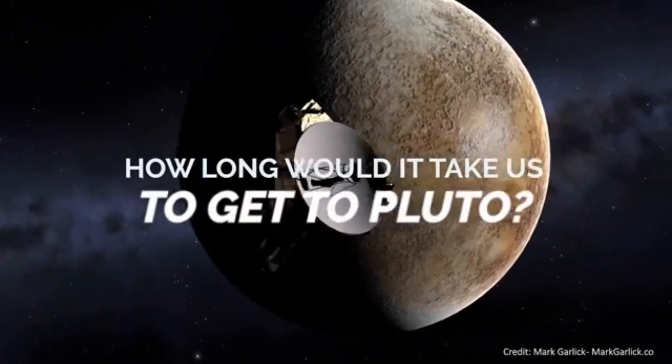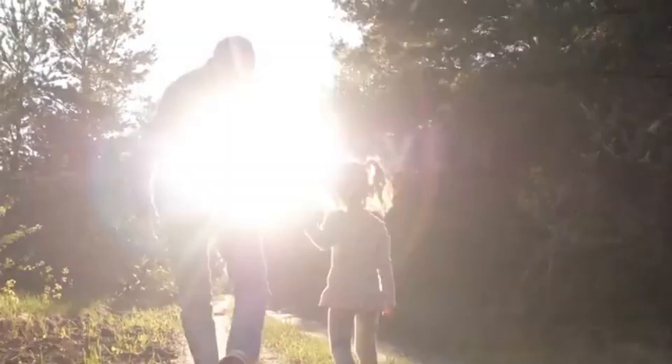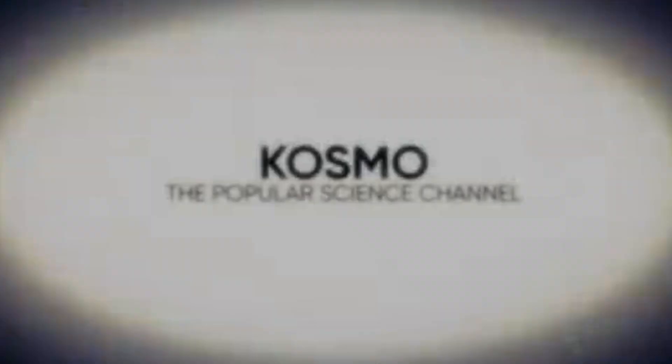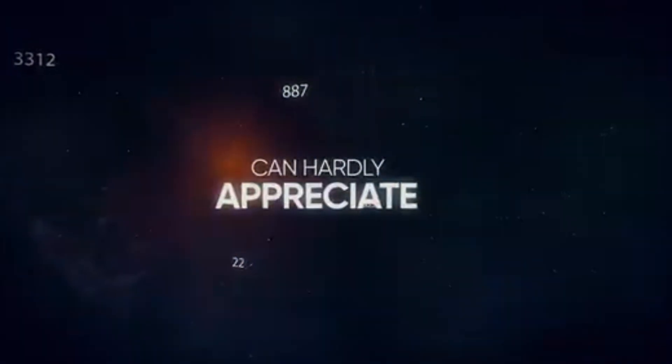From Pluto's lonely perch at the edge of the solar system, even the closest star is unimaginably distant. But what if you could stand on Pluto and gaze at Alpha Centauri? How far is it really, and what would the stars look like from there?